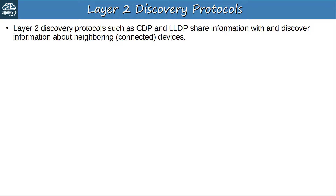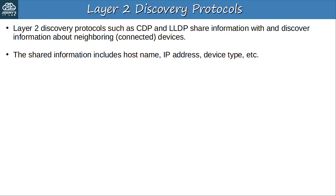Let's get started with a brief intro to Layer 2 discovery protocols. Layer 2 discovery protocols such as CDP and LLDP share information with, and discover information about, neighboring connected devices. They are called Layer 2 discovery protocols because the protocols themselves operate at Layer 2 — they don't use IP addresses. Although they are Layer 2 discovery protocols, they can be used to share Layer 3 information such as IP addresses too. The shared information includes hostname, IP address, device type, etc.